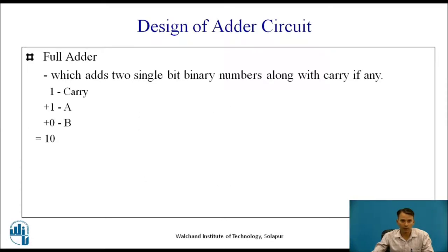Now let us see the design for the full adder. A full adder is also a combinational logic circuit which adds two single-bit binary numbers along with carry, if any. The difference between the full adder and half adder is that in the half adder, if there is a carry present it will not be considered, but in the case of the full adder it adds not only two single bits A and B but also carry if present. So 1 plus 1 plus 1 gives us sum 0 and carry 1. Let us draw a block diagram.